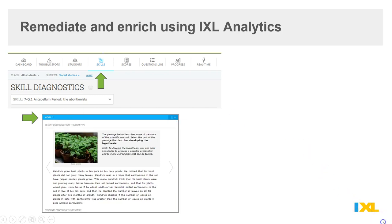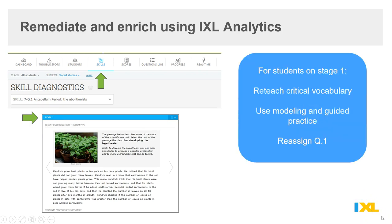But if I have a population of students still working in Level 1, they were not able to complete that assignment goal. Therefore, I'm going to pull that group of students into small group instruction. I'm going to reteach the critical vocabulary and concepts of the skill, model and do some guided practice with students. And then once I detect that confidence is there, I will reassign them that Q.1 skill practice.